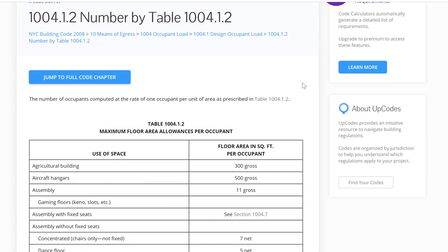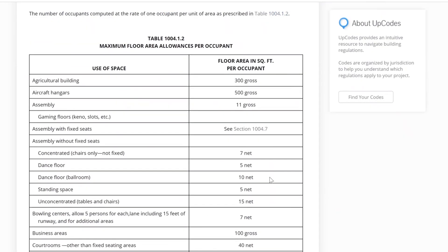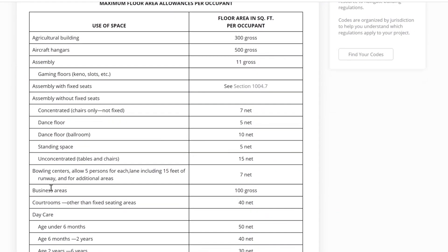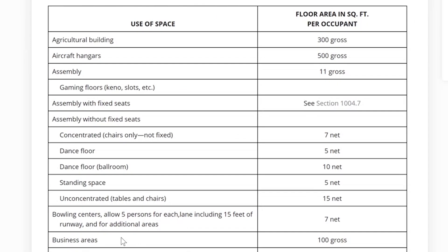Choose the category from the table that most closely matches your business. If nothing similar is found, then the general category of business area may be the best category for use. As an example, a beauty salon would use the business category, and the factor of 100 square feet per person would be used.